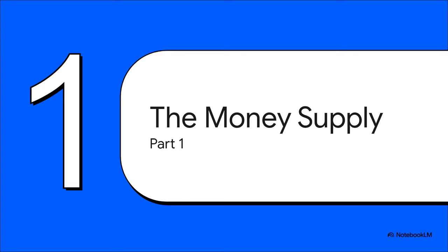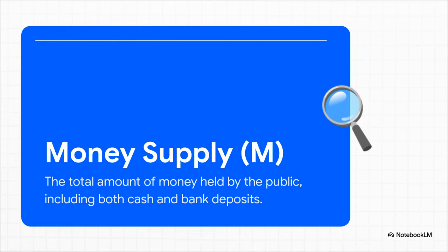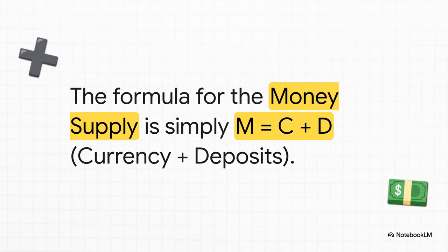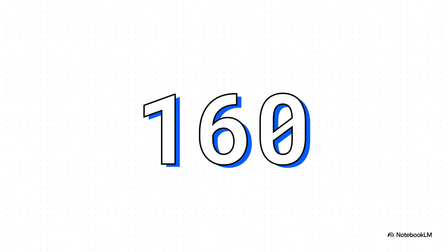Let's get into our first big concept: figuring out where that 160 shekel number comes from. So what exactly is the money supply? You'll often hear economists call it M. It's just the total amount of money available for the public to spend — the cash in your pocket plus all the money you can easily access in your bank accounts. The formula is incredibly simple: you take the currency held by the public, C, and add the deposits they have in the banks, D. M equals C plus D. Using our example numbers, we take the 60 in currency, add the 100 in deposits, and we get a total money supply of 160.